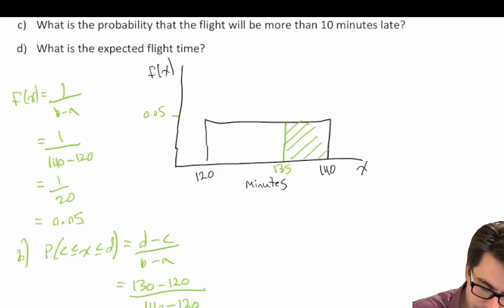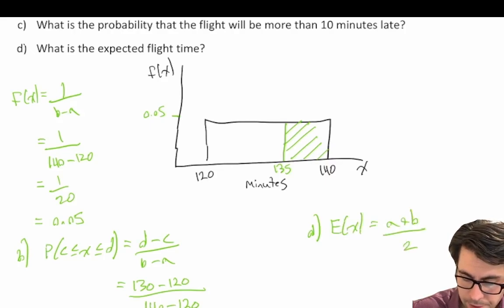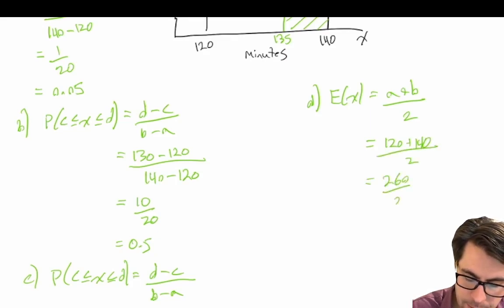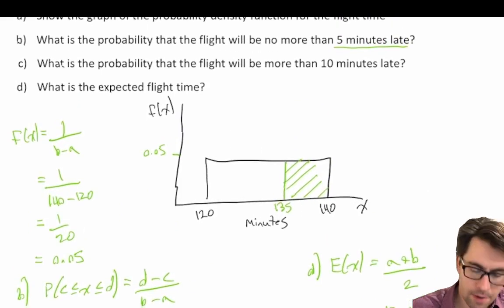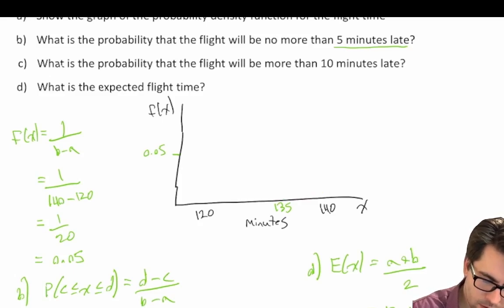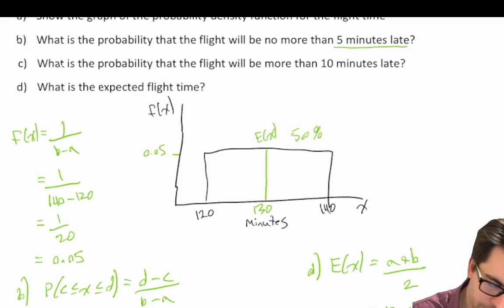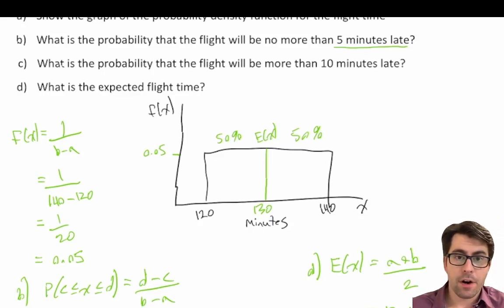And then finally, what is the expected flight time? Our expected value is equal to a plus b divided by 2, which is equal to 120 plus 140 divided by 2, which is equal to 260 divided by 2, which is equal to 130. So if we go back up to our graph, our expected value is at 130 minutes right in the center. So 50% of the observations should occur above the expected value and 50% should fall below. And just like that, we have completed our first practice problem.